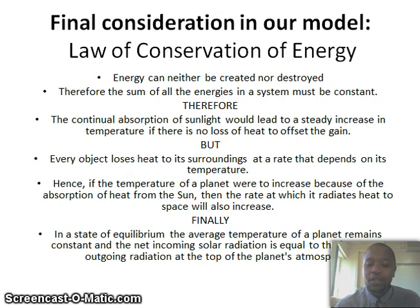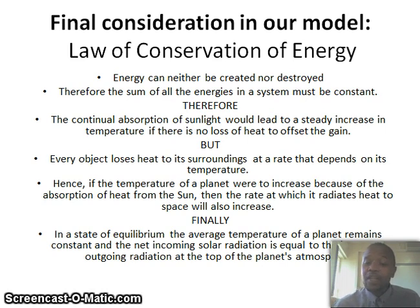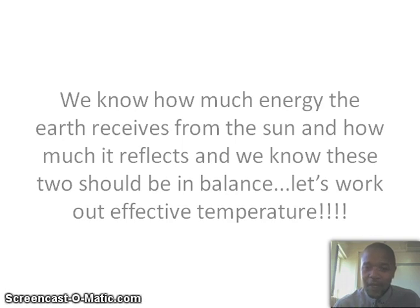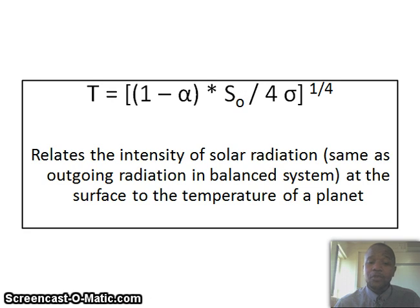In our final consideration for the model, let's look at the law of conservation of energy. Energy cannot be created or destroyed, so the sum of all energies in the system must be constant. The continual absorption of sunlight would lead to a steady increase in temperature if there's no loss to offset the gain. But every object loses heat to its surroundings at a rate that depends on its temperature. Hence, if the temperature of a planet increases due to absorption of heat from the sun, the rate at which it radiates heat will also increase. In a state of equilibrium, the average temperature of a planet remains constant, and net incoming solar radiation equals the long-wave outgoing radiation at the top of the planet's atmosphere. Now, using the rearranged Stefan-Boltzmann law, we can relate the intensity of solar radiation to the surface temperature of the Earth.